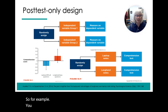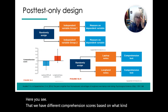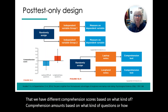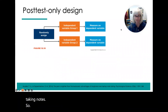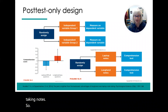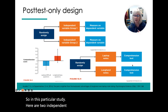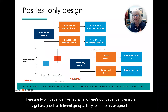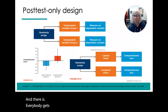Here you see that we have different comprehension scores based on what kind of notes they're taking. In this particular study, here are two independent variables and here's our dependent variable. Participants get randomly assigned to different groups, and everybody gets the same outcome measure — in this case, a comprehension test.